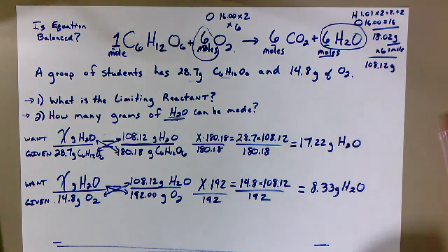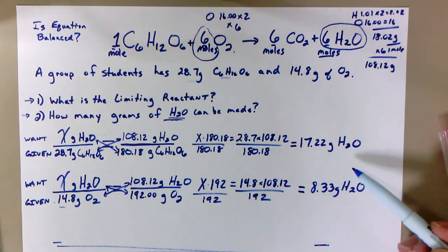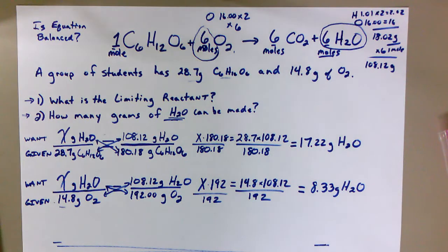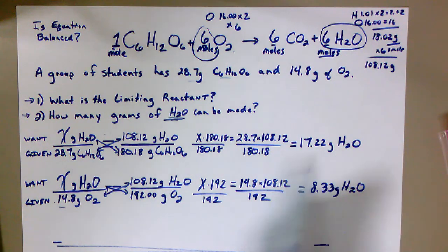So now we've got to take a step back. What did I just find out there? Well, what that's saying is if all of the O2 reacts, it is enough to make 8.33 grams of H2O. So we've got to look at these numbers and ask ourselves: what do we do with them? Do we add them together? Do we subtract them? Do we pick one or the other? We've got to go back to what we just said. If all of the C6H12O6 reacts, it's enough to make 17.22 grams of water. If all of the O2 reacts, the 14.8 grams, it's enough to make 8.33 grams of water.